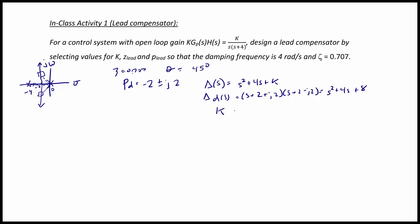So in other words, to meet my percent overshoot requirement, k must equal 8. And this is step 1 in the design process.